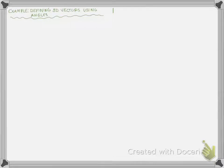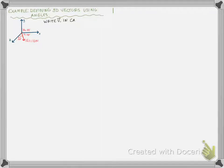We're going to bring both of those concepts together and work through an example where we define 3D vectors using angles and the magnitude of the vector. Here is my coordinate system — positive x, y, and z. I have a vector v1, and it has a magnitude of 10 newtons. I define it using three angles from the x, y, and z axes. Alpha, the angle from the x-axis, is equal to 70 degrees. Beta, the angle from the y-axis, is 85 degrees. And gamma, the angle from the z-axis, is equal to 20 degrees. We would like to write that vector v in Cartesian vector form.